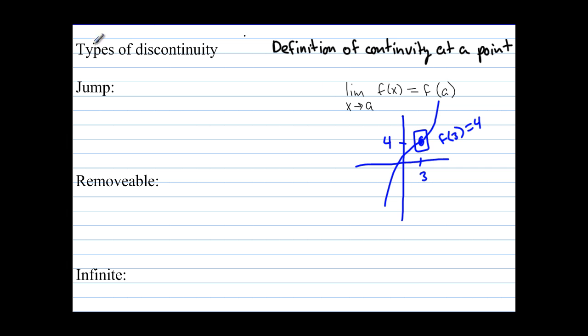All right, let's jump to types of discontinuity. The first discontinuity is a jump discontinuity. A jump discontinuity looks something like this, where the function goes to one point, and then it jumps up to another point.